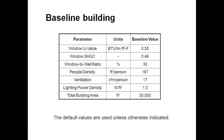You can use the sliders to input these values. Specifically, the window U-value needs to go to 0.55, so you can just click on the slider and drag it to that value. Similarly, the values for solar heat gain coefficient, window-to-wall ratio, people density, ventilation rate, lighting power density, and overall building square footage need to be updated.